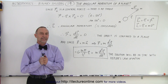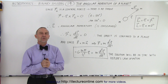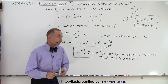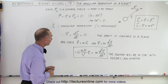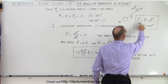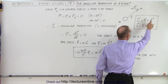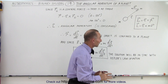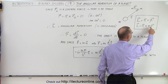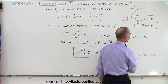Welcome to our lecture online. Now let's take a closer look at the angular momentum of a planet as it goes around the sun, or any planet going around any star. We define the angular momentum as simply the cross product of the position vector and the momentum of the planet. The momentum of the planet can be written as the product of the mass times its velocity vector.